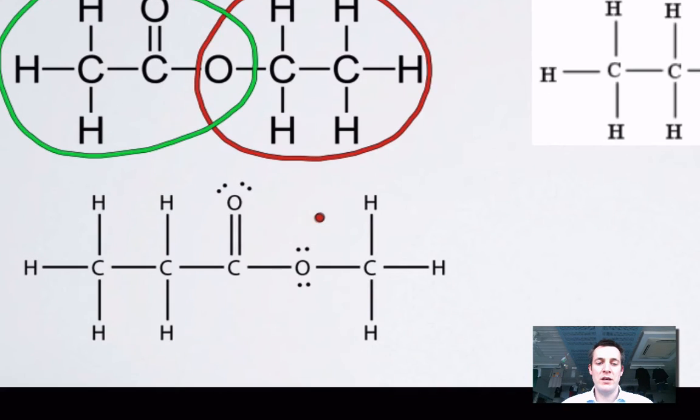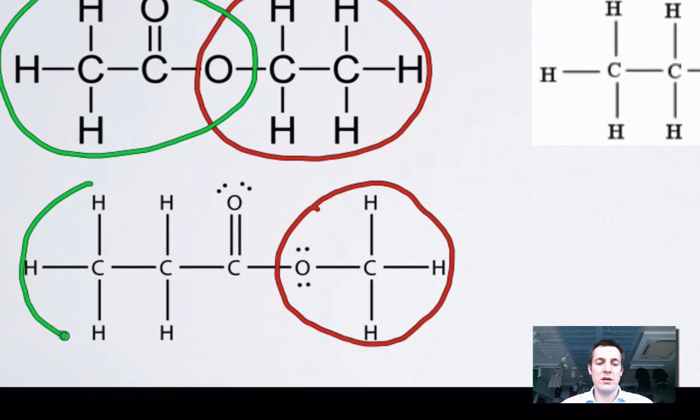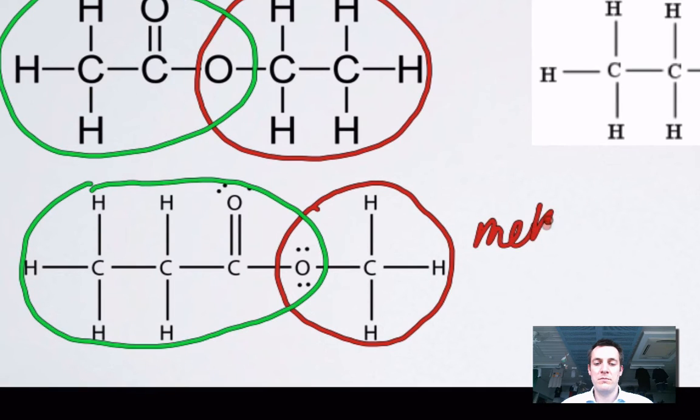If we look at this example here, here's the bit that looks like an alcohol, at least it looks like an alcohol that's lost its H. Here's the bit that looks like the carboxylic acid, which again appears to have lost its H. What am I going to call this? Well, the alcohol part gives me the start of the name, so this would be methyl, and then one, two, three carbons here, so propanoate.